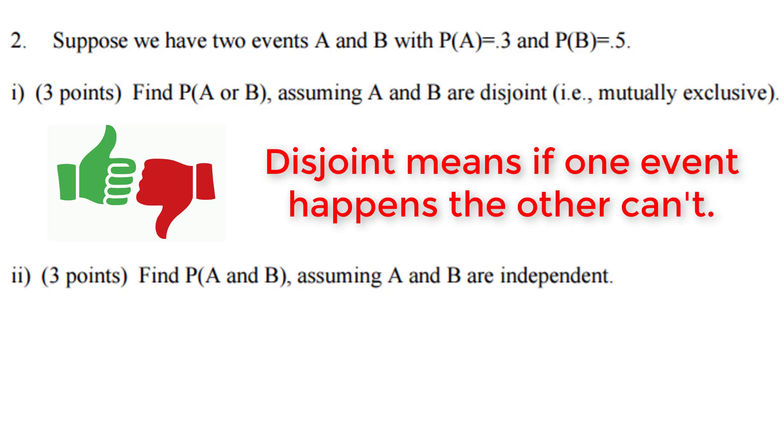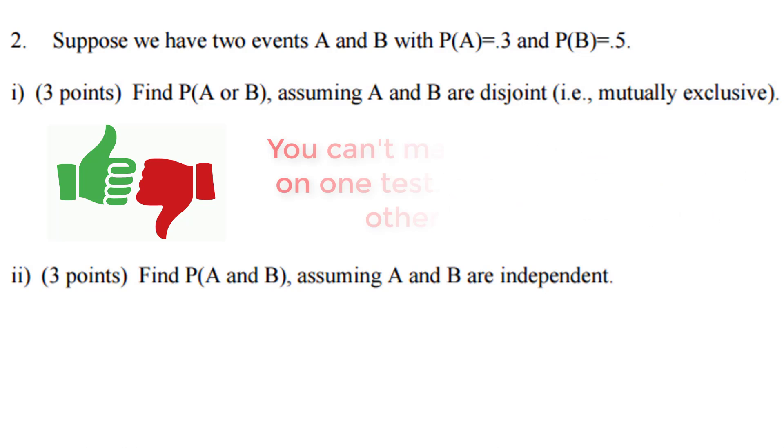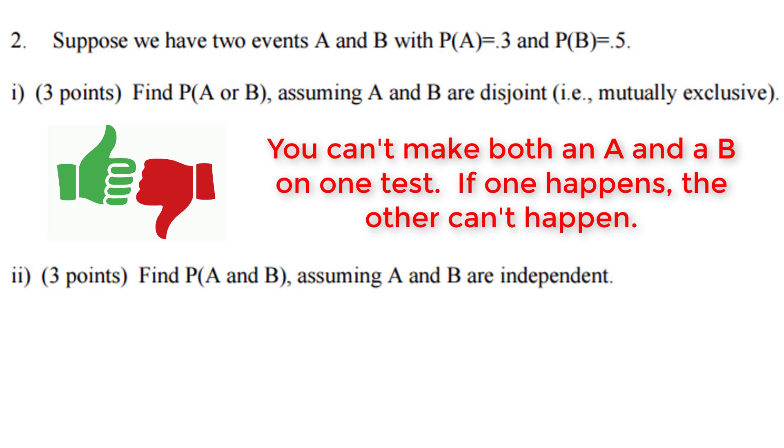I like to think about these events as the probability of getting an A or the probability of getting a B. If you get an A on the test, you can't also get a B on that same test. Once again, that means the events are disjoint.